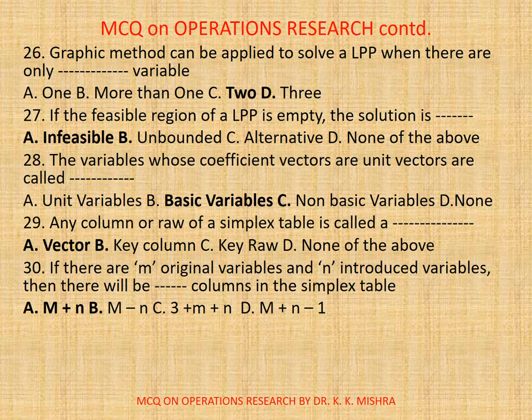Question 27. If the feasible region in a LPP is empty, the solution is Dash. A, Infeasible. B, Unbounded. C, Alternative. D, None. The correct option is A, Infeasible.